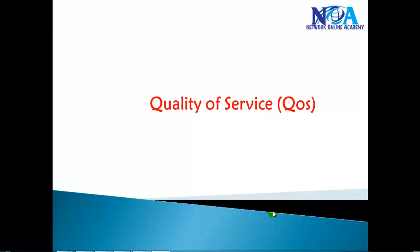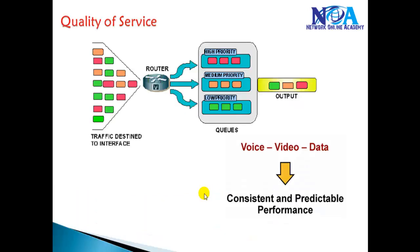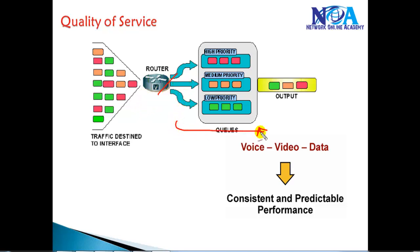In this video we'll see the basic introduction to Quality of Service, why there is a need for it, what different network issues come up, and how to overcome them using QoS. Quality of Service is a method of giving priority to some specific information as it goes over the network. In a network, we normally have different types of traffic.